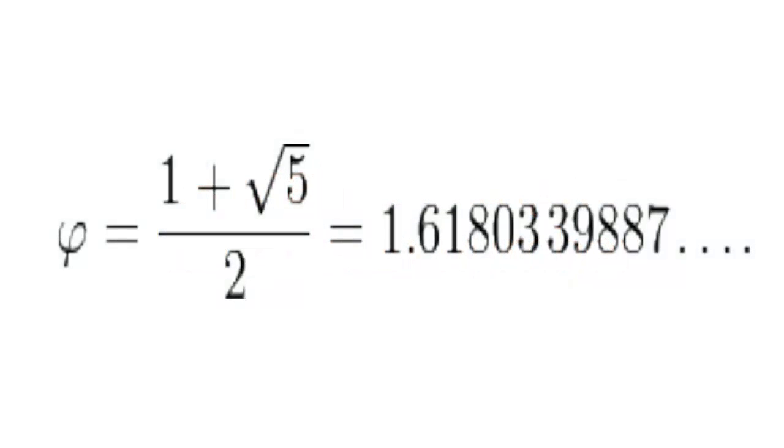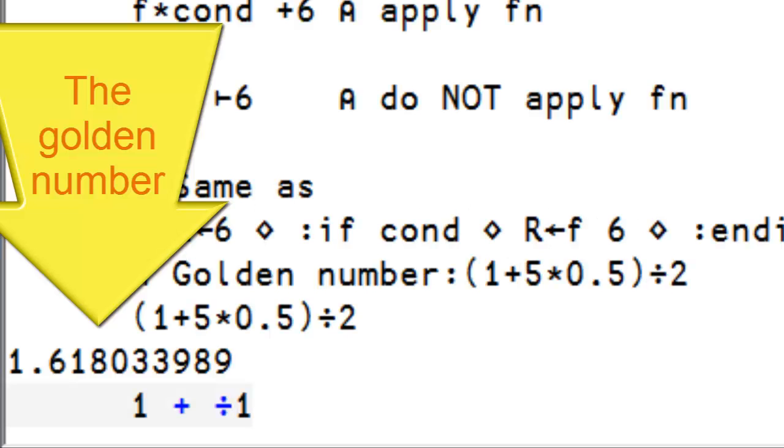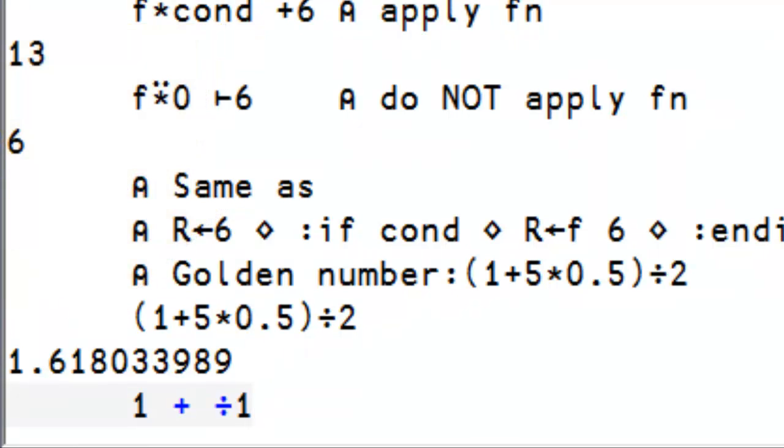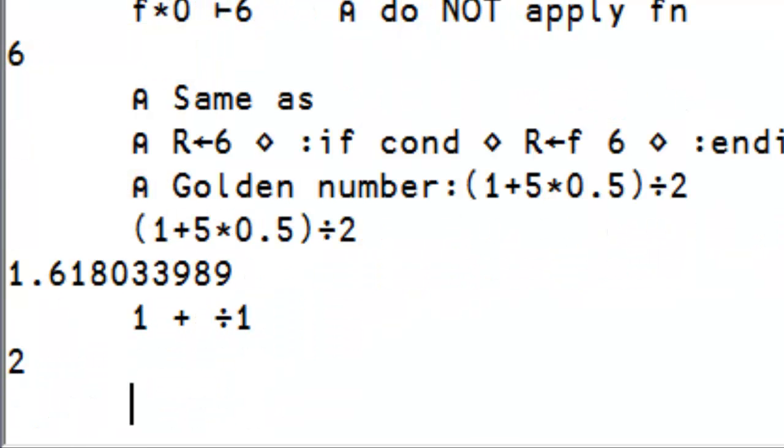Here's an example for people with math background. The golden number is given by this formula, which in APL is represented by this. This number can also be computed by a function, which is the repeated application of the expression here. So,